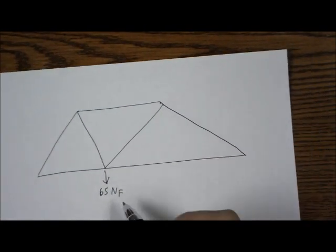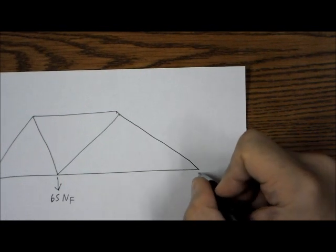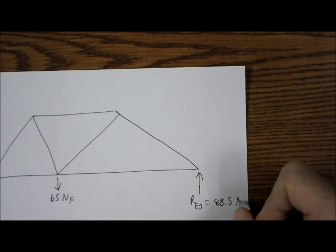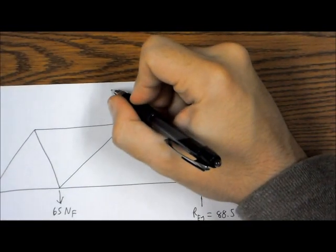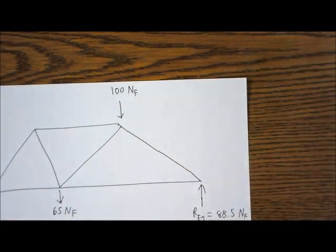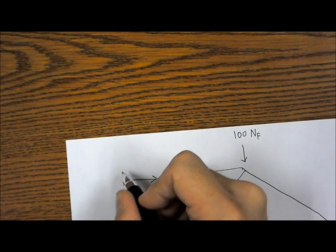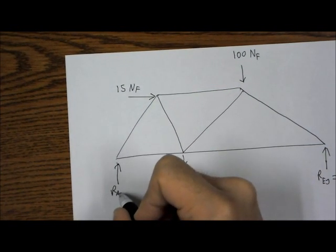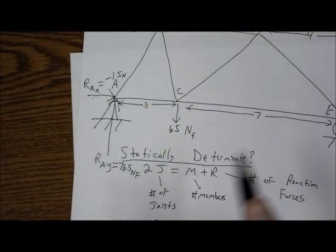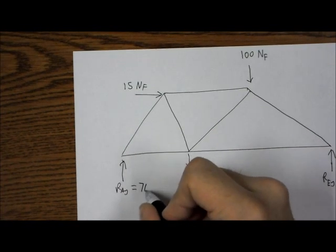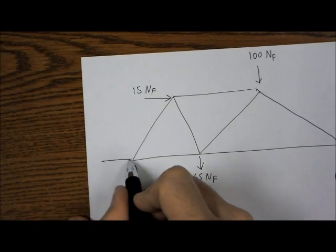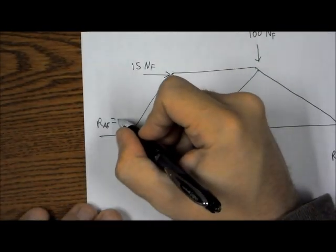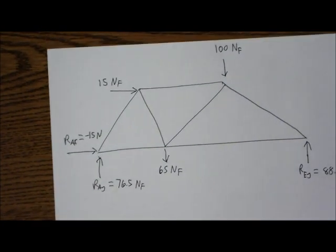And it doesn't have to be to scale, just do the best job that you can. That's why we label it. 65 Newtons of force there. Here, instead of even drawing in the roller, we're just going to put the reaction force down. So REY equals 88.5 Newtons of force. Here we have the initial force of 100 Newtons. Same with right here. 15 Newtons of force.